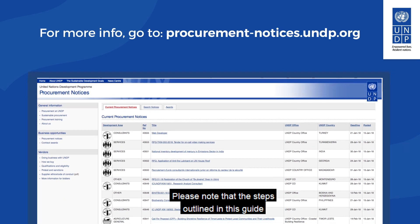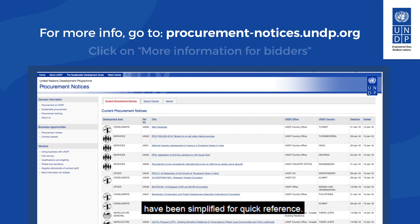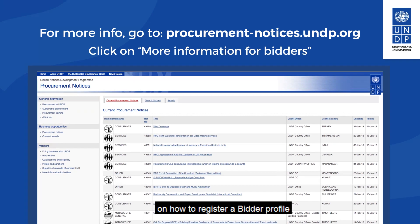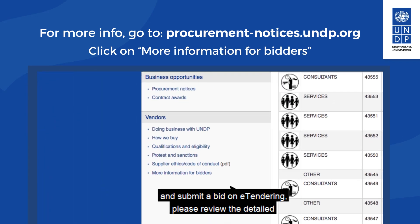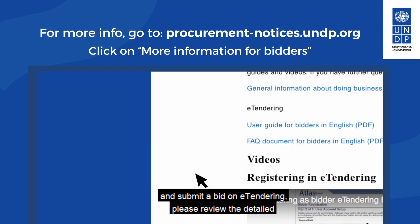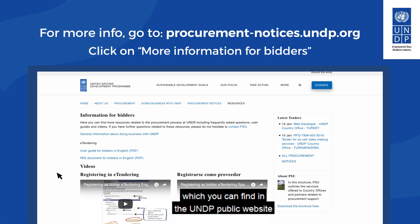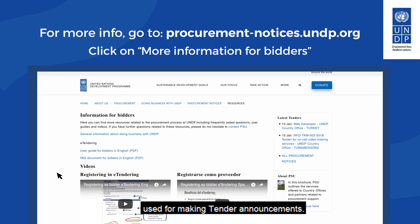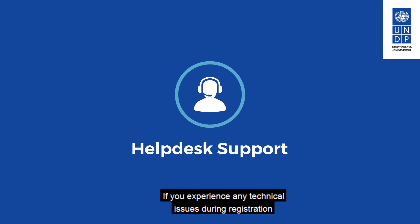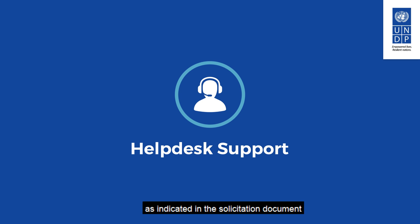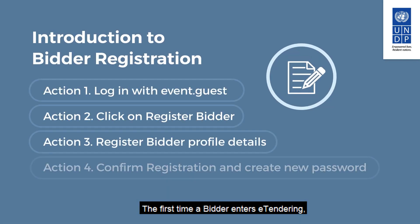Please note that the steps outlined in this guide have been simplified for quick reference. For more detailed information on how to register a bidder profile and submit a bid on eTendering, please review the detailed eTendering bidder user guide document, which you can find on the UNDP public website used for making tender announcements. If you experience any technical issues during registration and require further assistance, please contact the focal point of the procurement office as indicated in the solicitation document for the tender you wish to bid on.